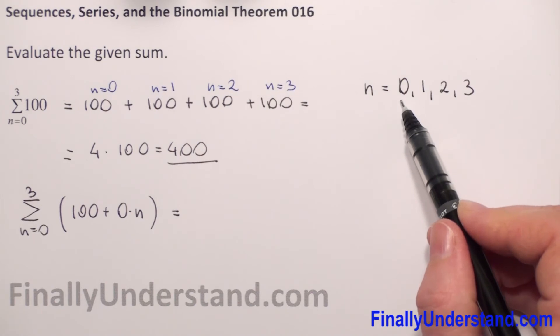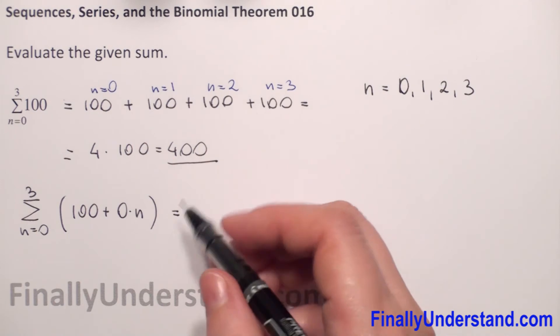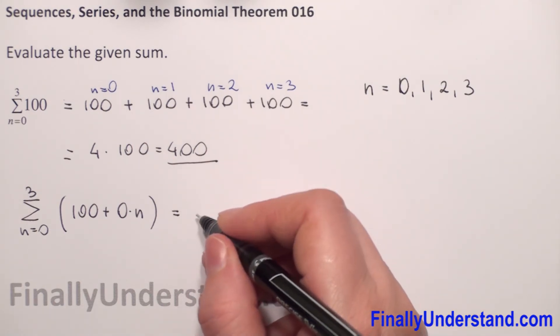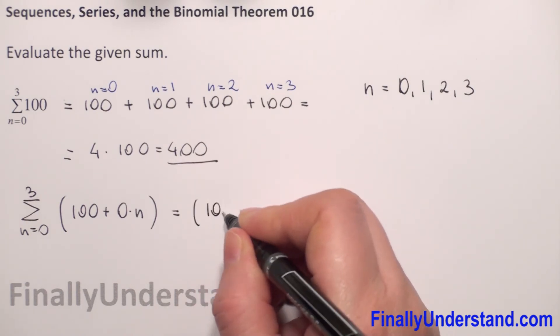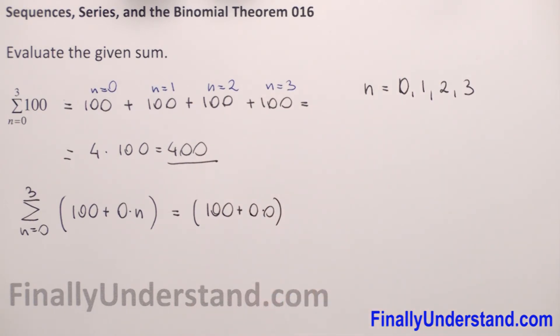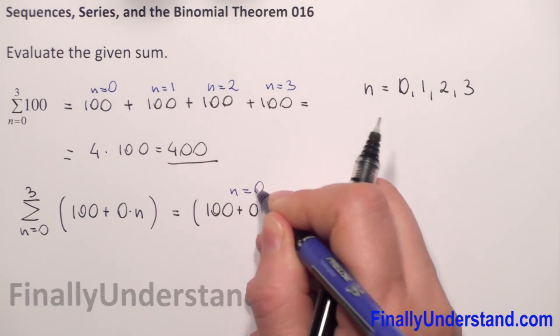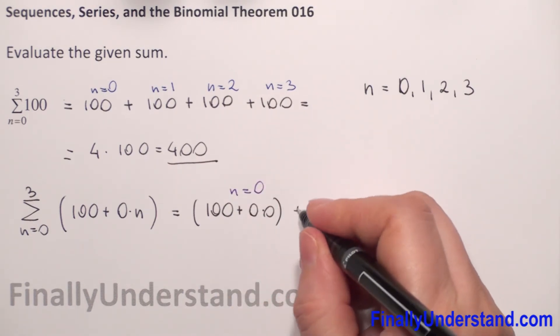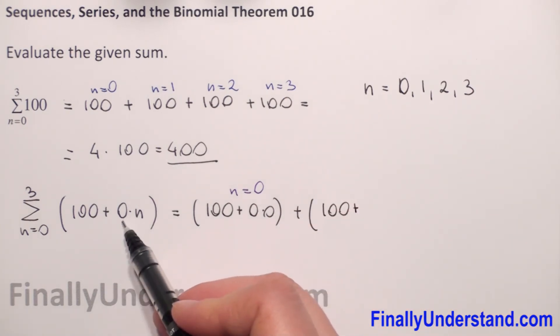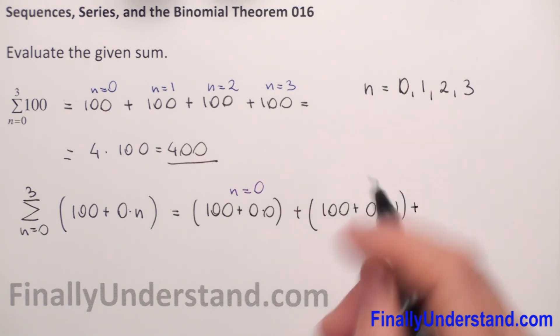0 is the lower limit and 3 is the upper limit. So for n equals 0, we have 100 plus 0 times 0. This is for n equals 0.